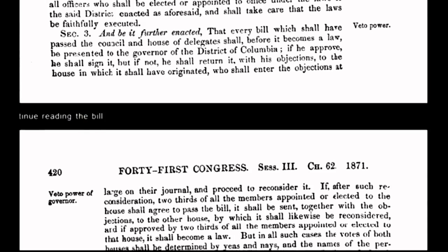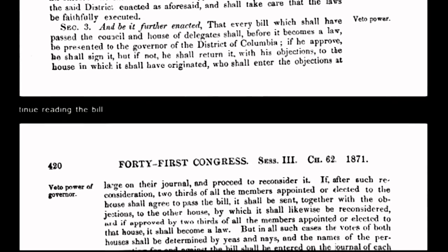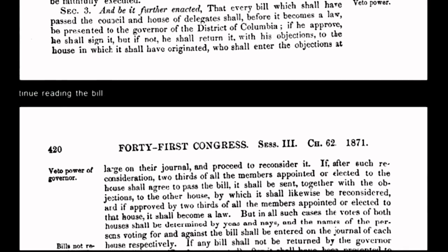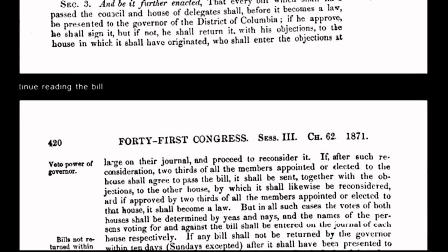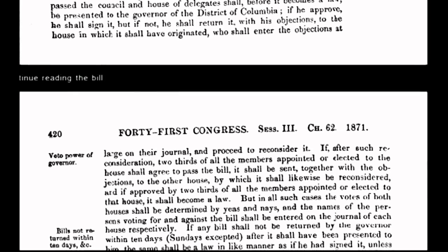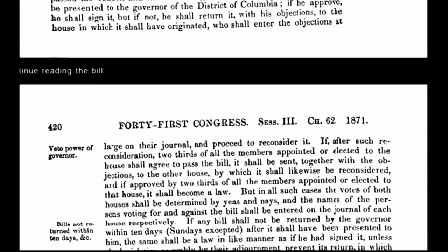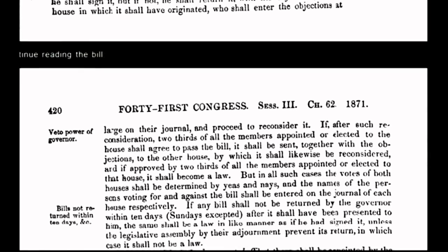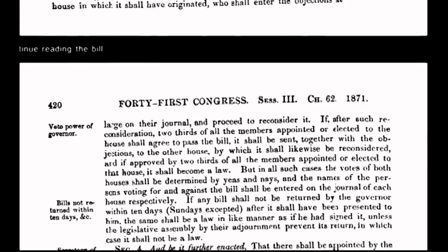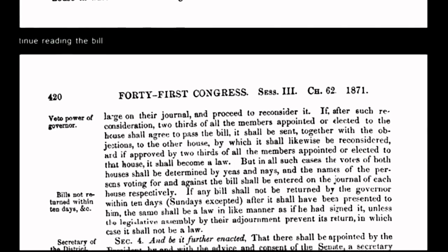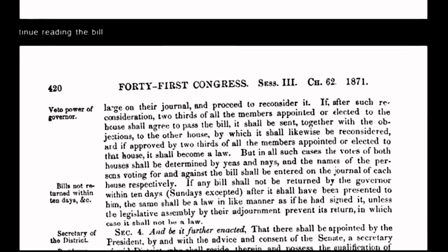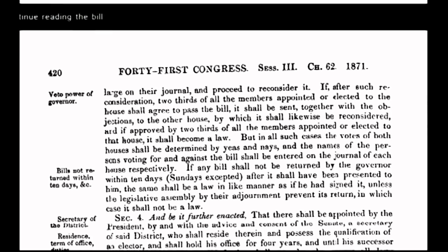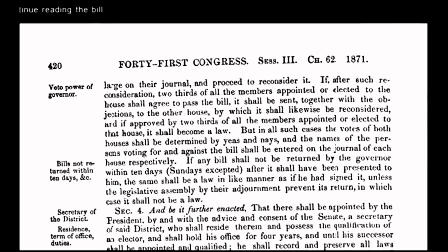Instead of having absolute and unalienable rights guaranteed under the organic constitution, we the people now have relative rights or privileges. One example is the sovereign's right to travel, which has now been transformed under corporate government policy into a privilege that requires citizens to be licensed — an example would be passports. By passing the Act of 1871, Congress committed treason against the people who were sovereign under the grants and decrees of the Declaration of Independence and the organic constitution.